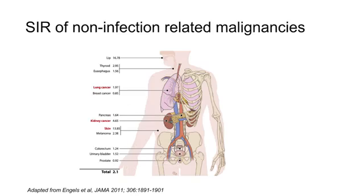Also, non-infection-related malignancies show an increased incidence in transplant recipients. In this picture, you can see the risk of non-infection-related malignancies. The risk of lung cancer is two times increased, whereas the risk for kidney cancer is 4.7 times increased. Finally, the risk for skin malignancies is up to 100 times increased. Skin malignancies can be divided into malignant melanoma and non-melanoma skin cancer, also called keratinocyte carcinoma.